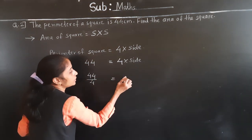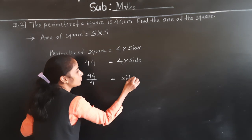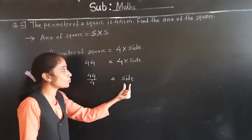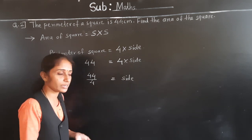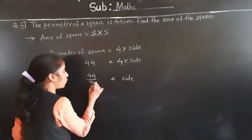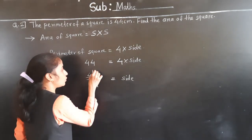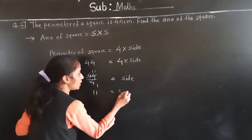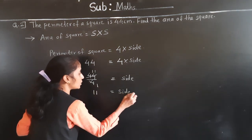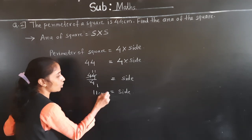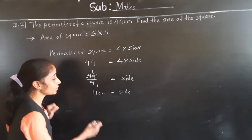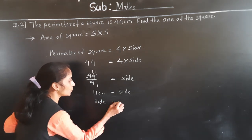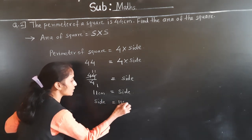After transferring 4 to the left-hand side, only side remains on the right. 44 ÷ 4: 4 ones are 4, 4 ones are 4, 4 ones are 4 — so side = 11 centimeters. Side is equal to 11 centimeters.